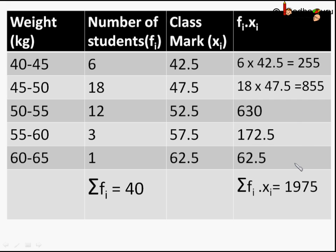Then we find sum of frequency, that is 6 plus 18 plus 12 plus 3 plus 1, which is equal to 40.